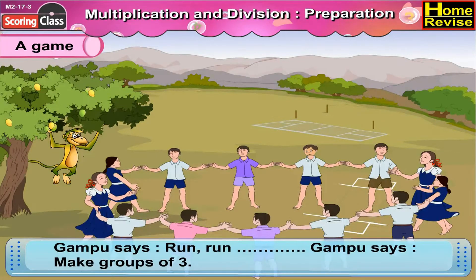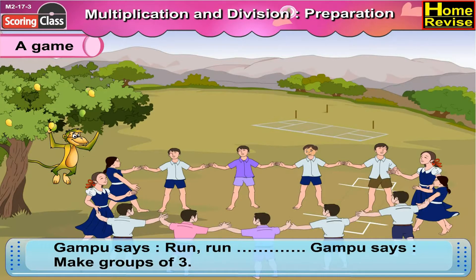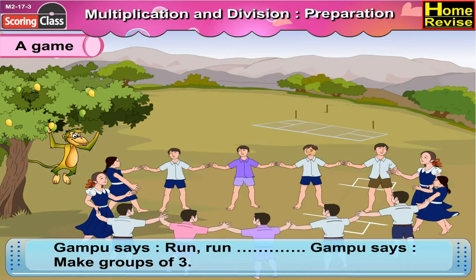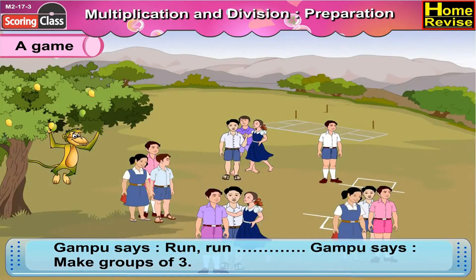Gampu says, run, run, run, run, run, run. Gampu says, make a group of three.